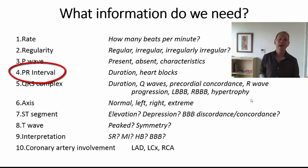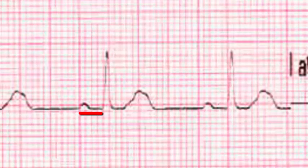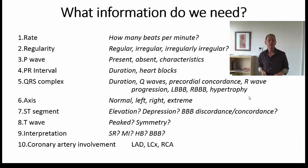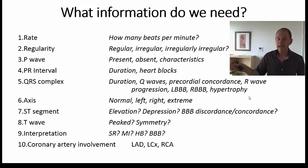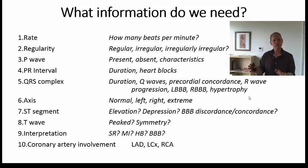The next thing we look at is the PR interval — that is the distance from the start of the P wave to the start of the Q wave, or the start of the QRS complex. If that PR interval starts to get elongated above five small squares, which is 0.24 seconds, then we start getting into the realms of a first degree heart block. Just look at the PR interval: is it within normal limits, less than the 0.2 to 0.24 second range, or is it getting longer than that?